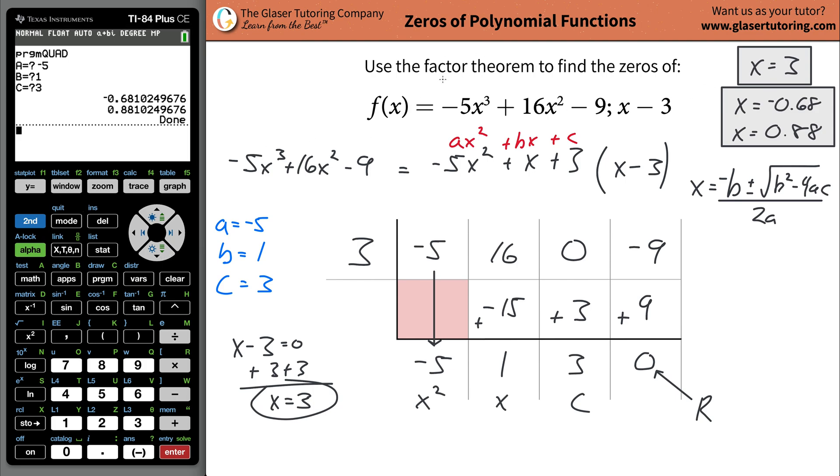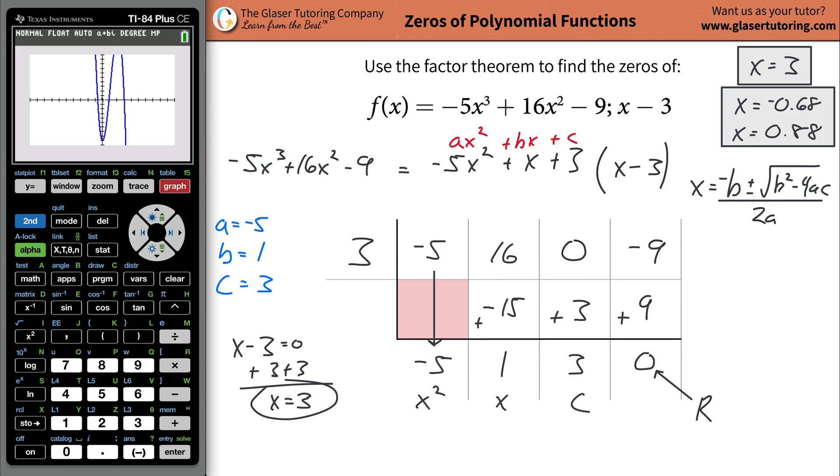And if you want to just look at this visually, right? I mean, remember the whole goal of the problem is to find the zeros of this function. In other words, just find where it crosses the X axis. So just go to Y equals do negative five X cubed. Then do plus 16 X squared. And then just minus nine. Hit graph and look, right?